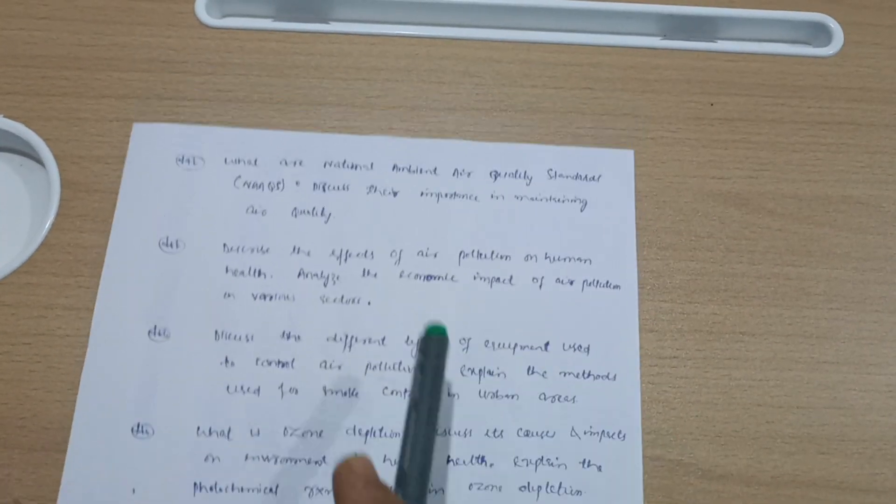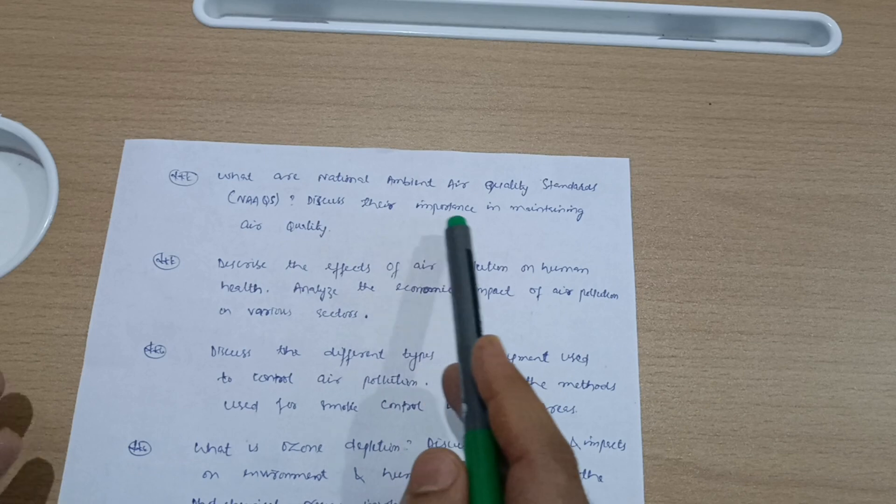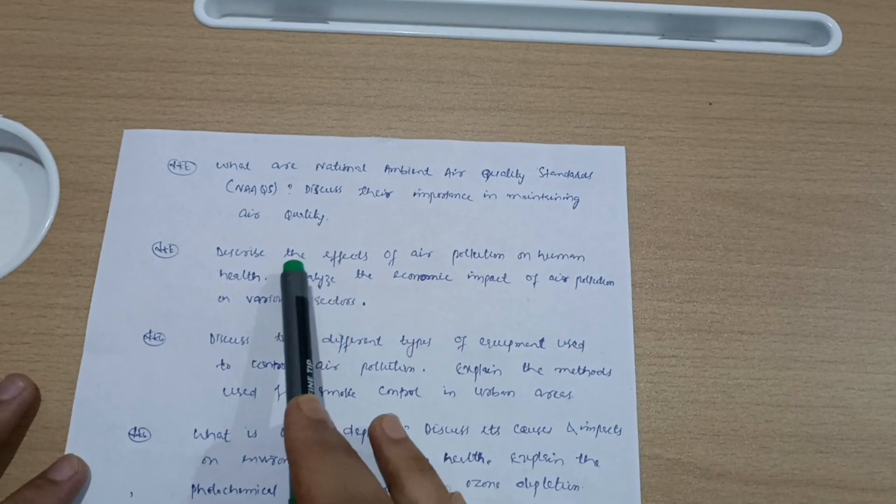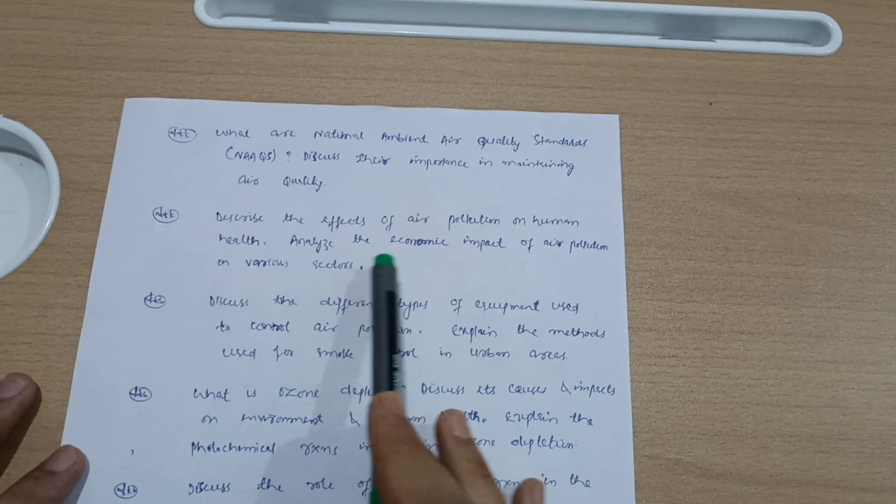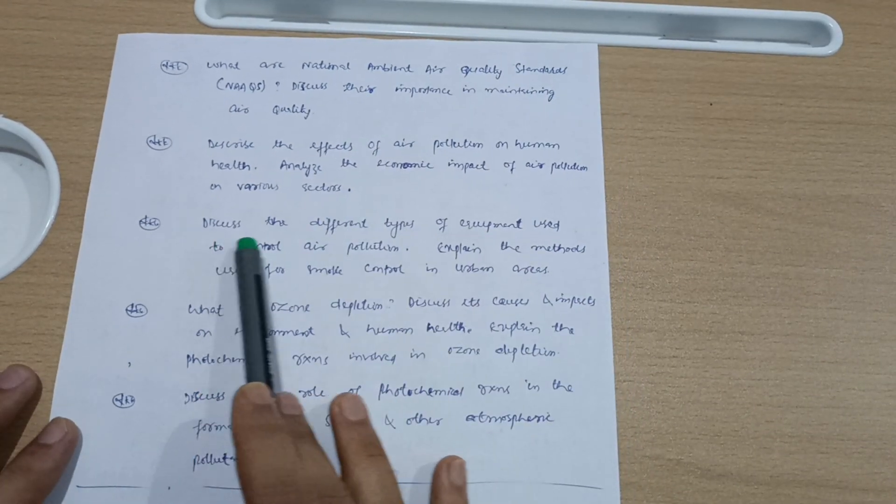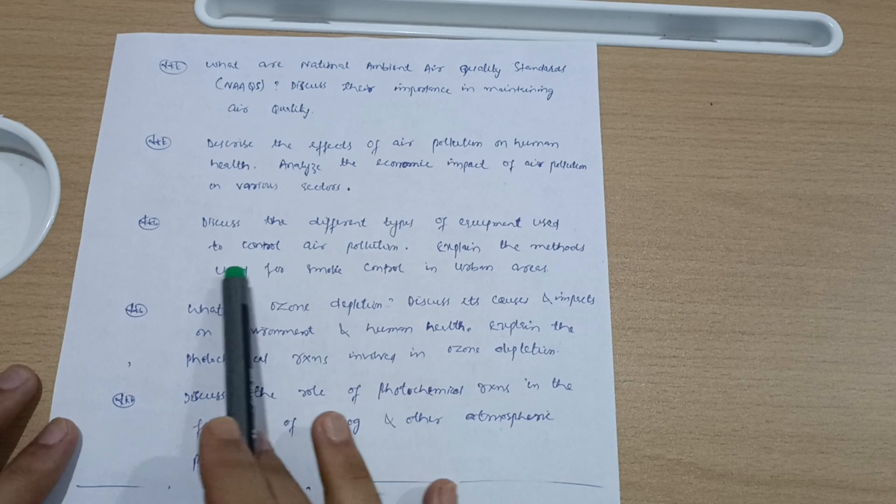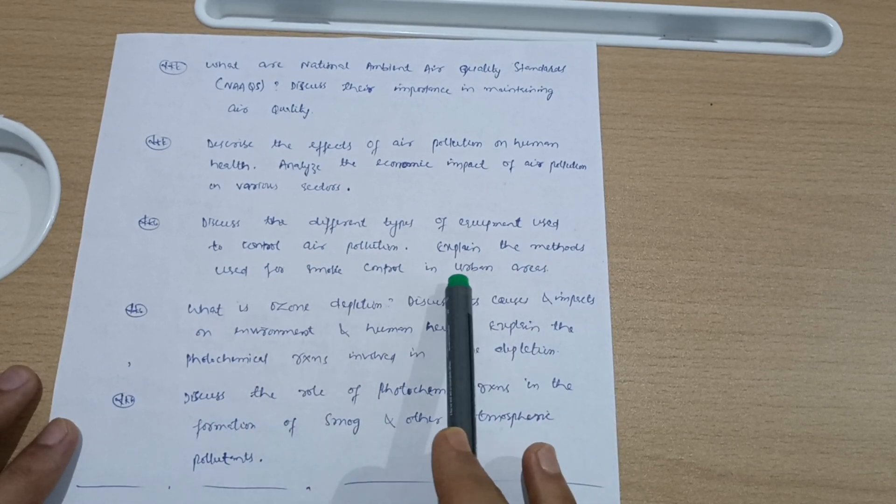What are National Ambient Air Quality Standards (NAQS)? Discuss their importance in maintaining air quality. Describe the effects of air pollution on human health. Analyze the economic impact of air pollution on various sectors. Next, discuss the different types of equipment used to control air pollution.